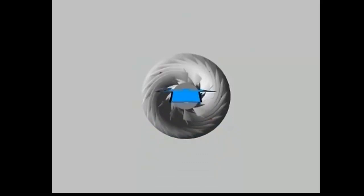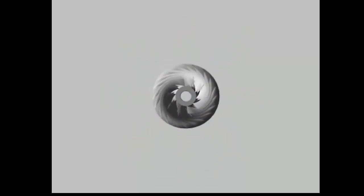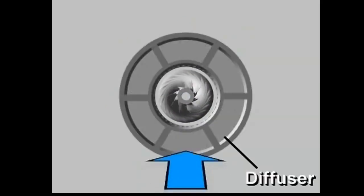To achieve the desired pressure increase, or compression, the vapor must be slowed down, converting its velocity pressure to static pressure. That's where the diffuser comes in.